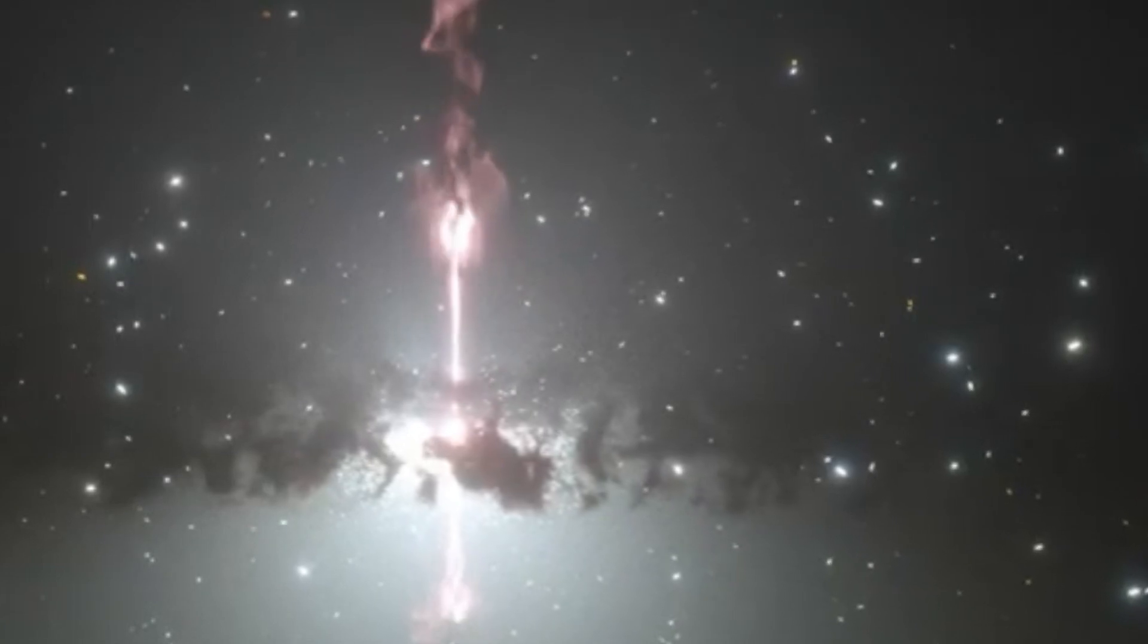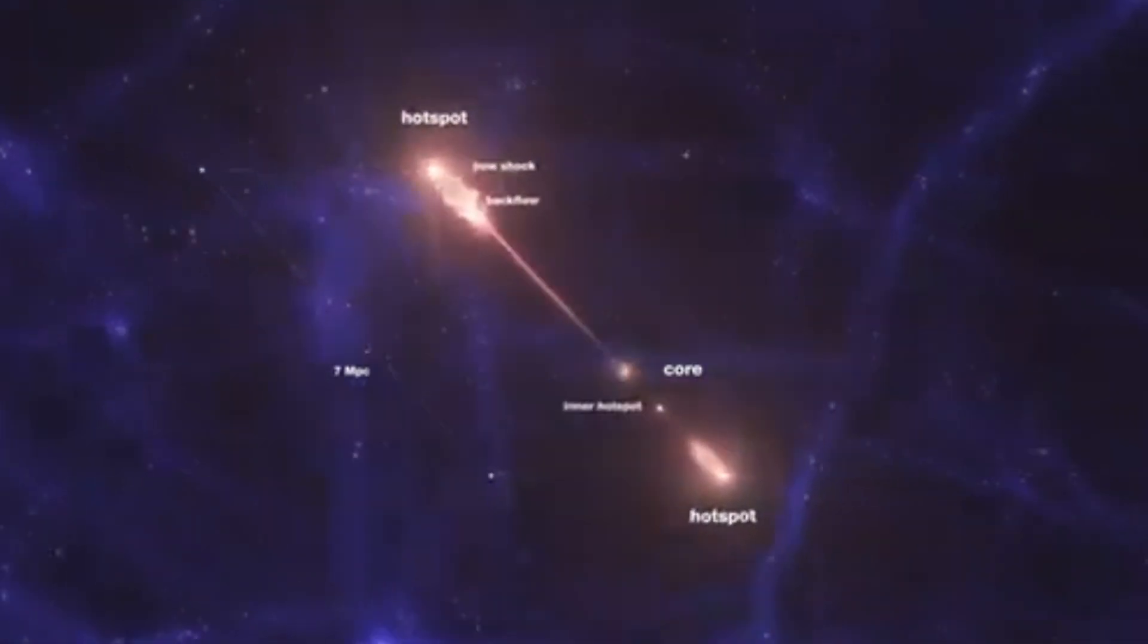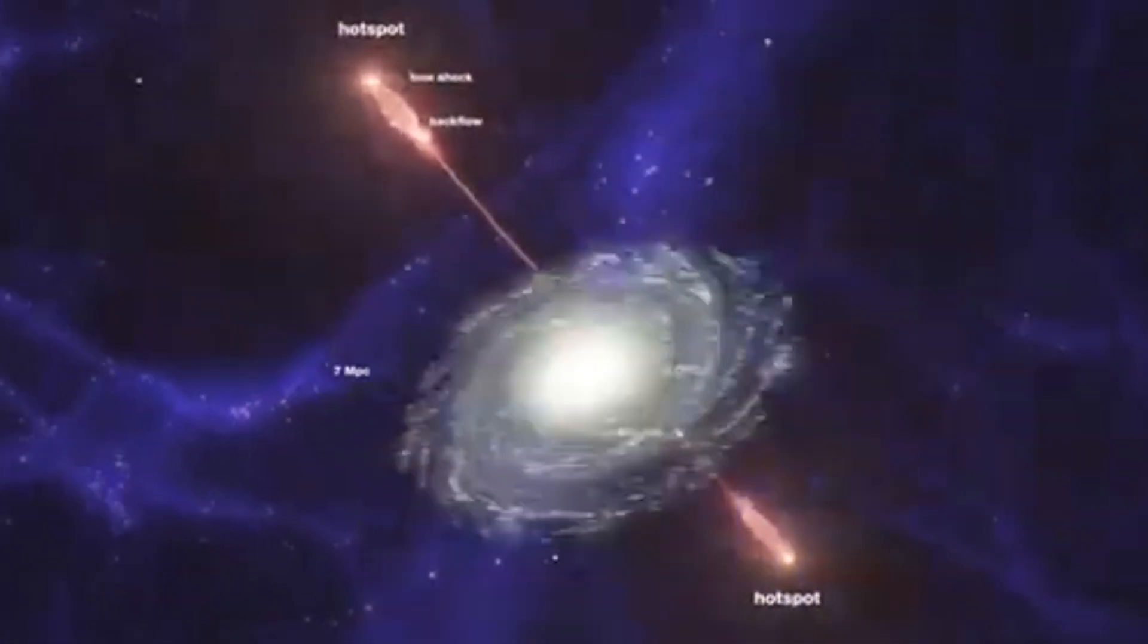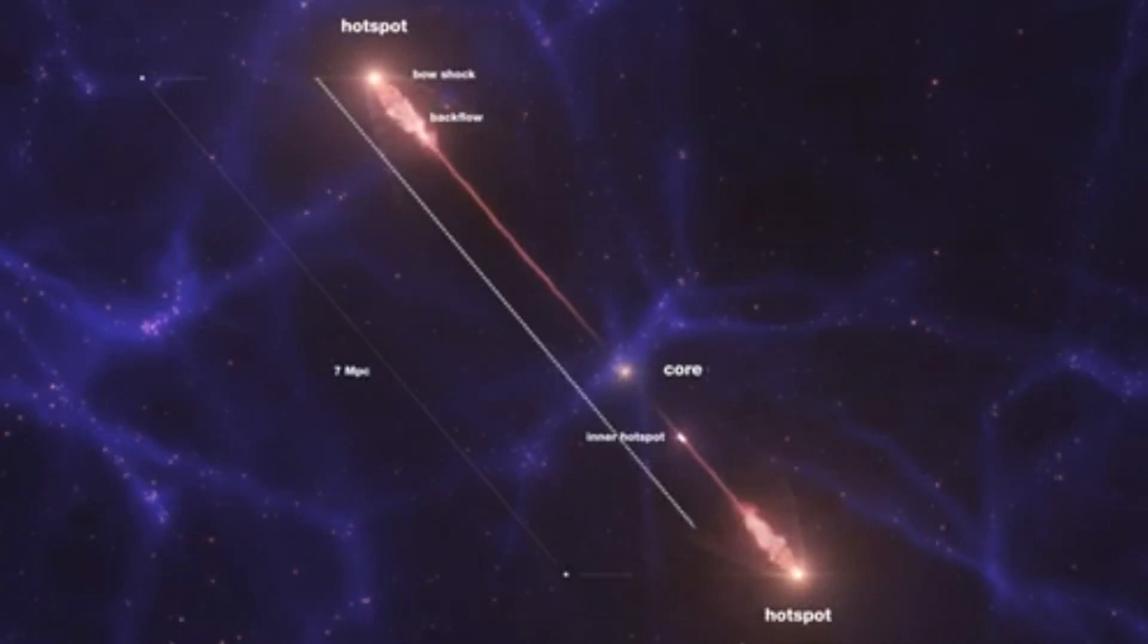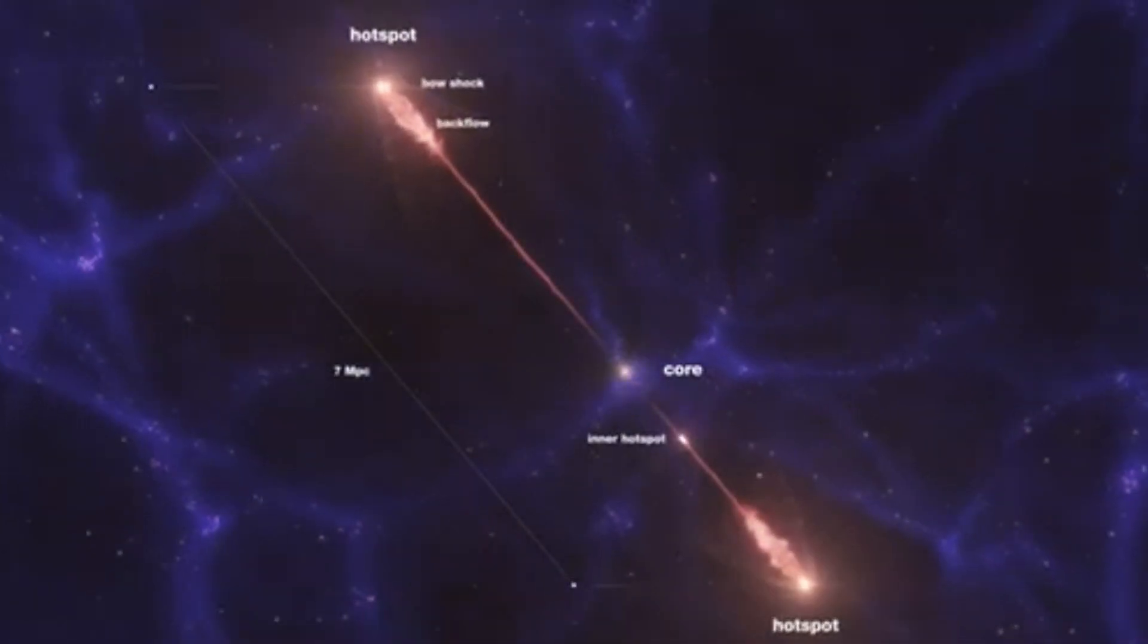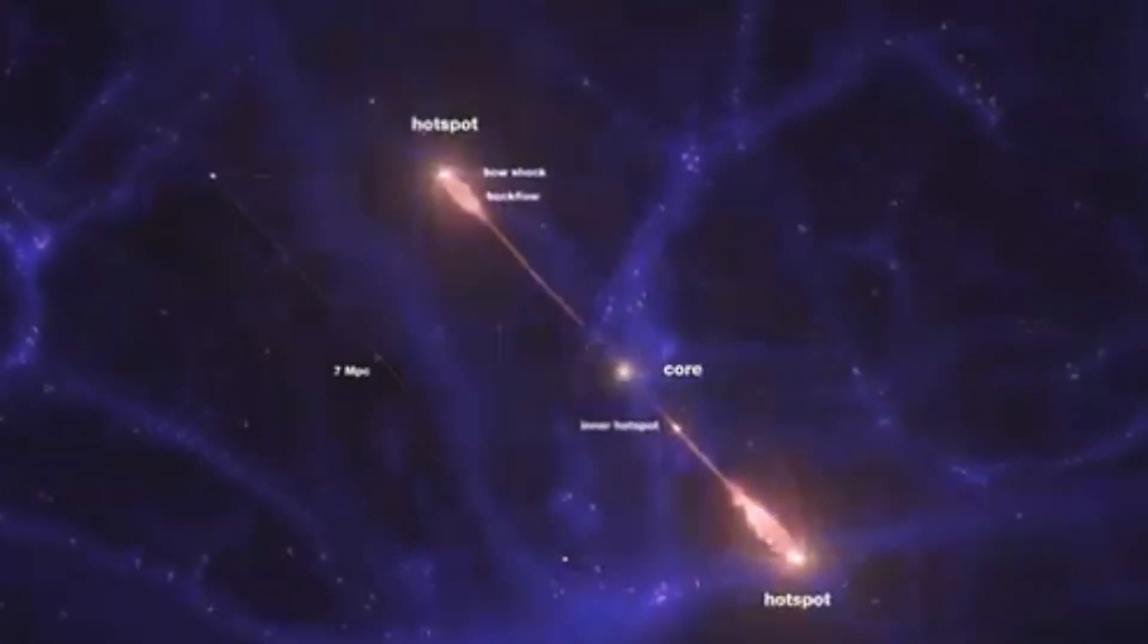The Porphyrion jets are erupting from a supermassive black hole at the heart of a galaxy about 7.5 billion light-years away, which means we're seeing them as they existed when the universe was much younger.